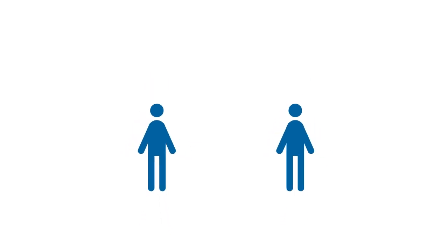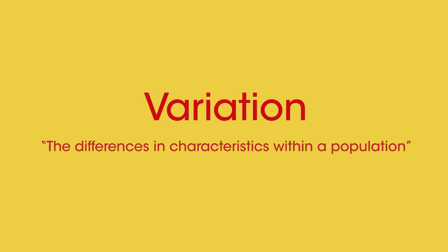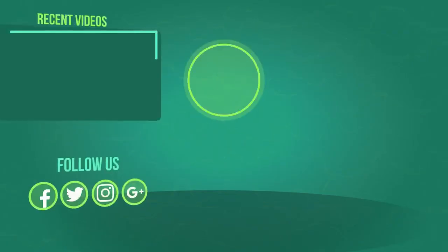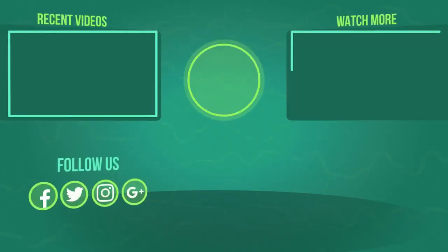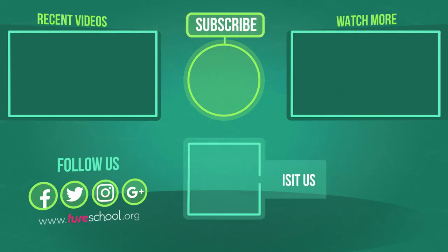So in this video we learned about variation and how it can be controlled by genetics, the environment, or sometimes both. If you like the video, give it a thumbs up and don't forget to subscribe. Comment below if you have any questions.